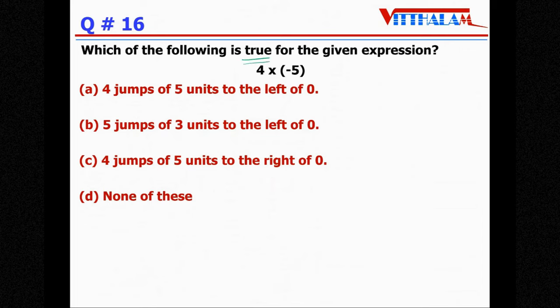Next, which of the following is true for the given expression 4 multiplied by minus 5? So 4 multiplied by negative 5, it's multiplication, let's see the options. It's 4 jumps of 5 units to the left of 0, so this will be written as 4 into minus 5, however let's check for other options, 5 jumps of 3 units.